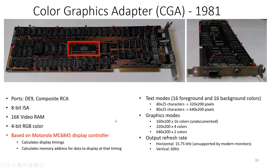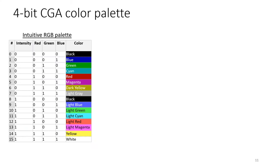CGA has two modes. One is Character Mode, where the computer tells the graphics card to display a character at a specific position and the card handles it. The other is Graphics Mode, where you control every single pixel. The standards it supports are very low by today's standard. The 4-bit color is basically just red, green, blue, and an intensity value - bright or less bright. These are all the 16 colors. However, what we think the colors should look like based on RGB mixing is not exactly what the monitor actually shows.